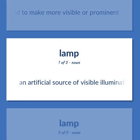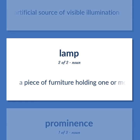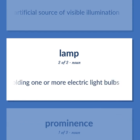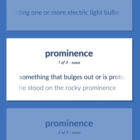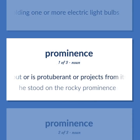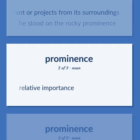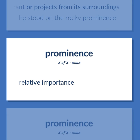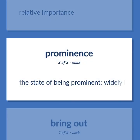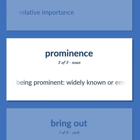Prominence: an artificial source of visible illumination. A piece of furniture holding one or more electric light bulbs. Something that bulges out or is protuberant or projects from its surroundings — he stood on the rocky prominence. Relative importance. The state of being prominent, widely known, or eminent.